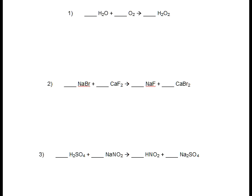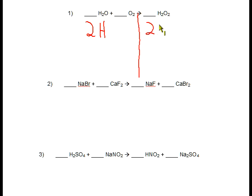We're going to balance our chemical equations. For number one, the first thing we're going to do is count how many atoms of each element we have in the reactants and products. So on the left, we have two hydrogens. On the right, we have two hydrogens. On the left, we have one oxygen atom plus two oxygen atoms equals three oxygen atoms. On the right, we have two oxygen atoms.